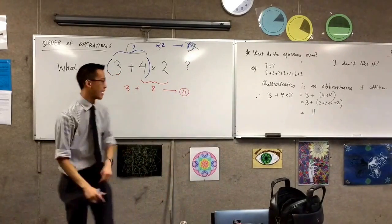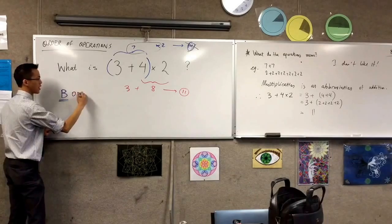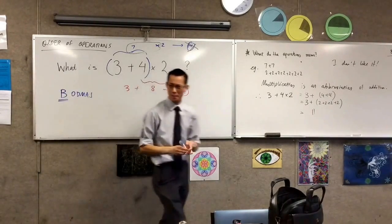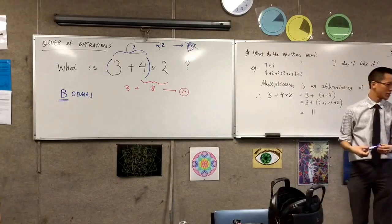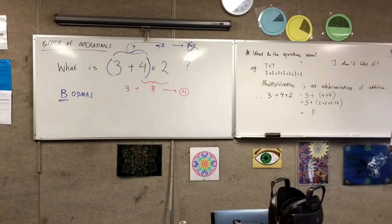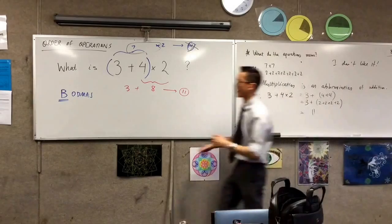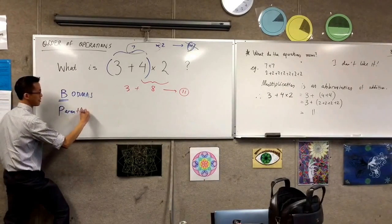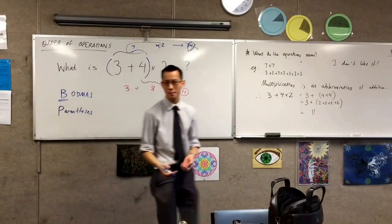So over here, brackets indicate — do this first. It's a bit like highlighting with color. You can use brackets to change the order if you want. That's why in BODMAS the B is first — it stands for brackets. The Americans put P in the front, which stands for parentheses — just another word for brackets.